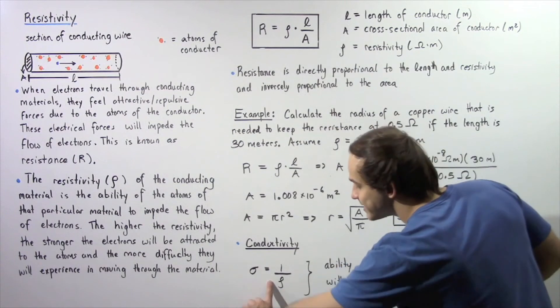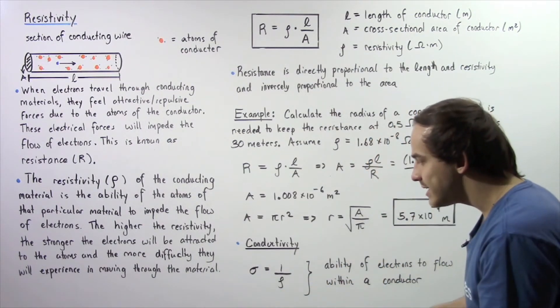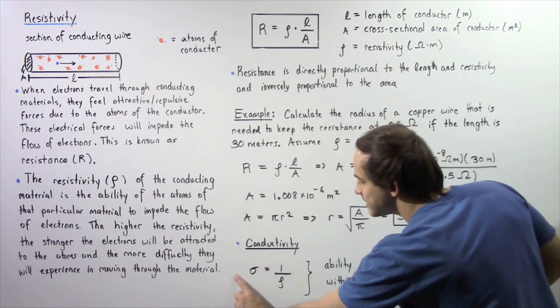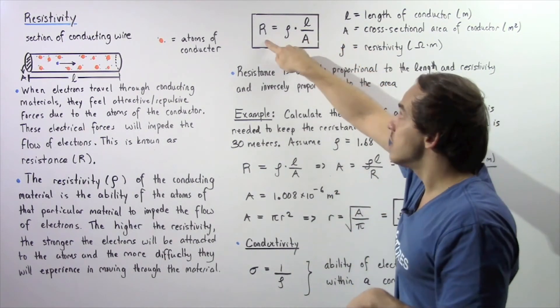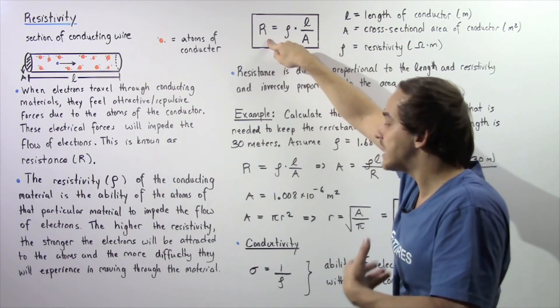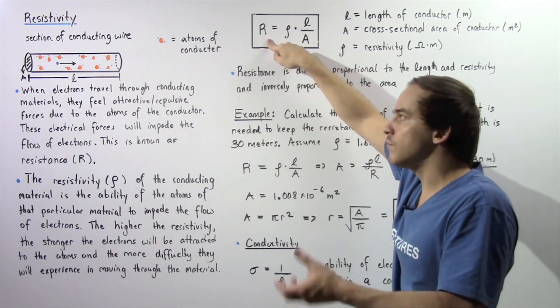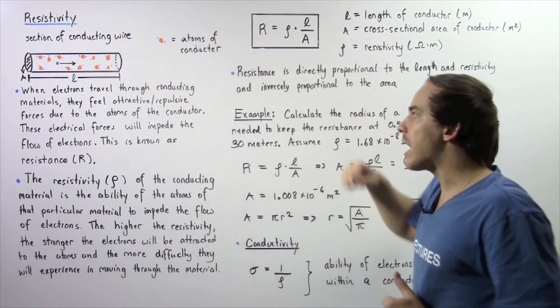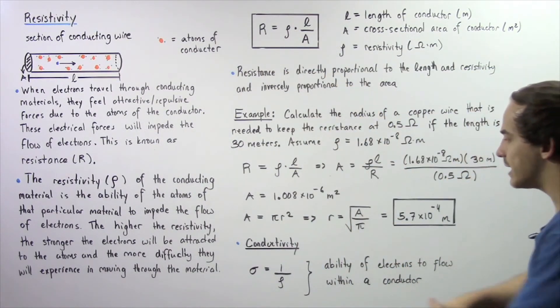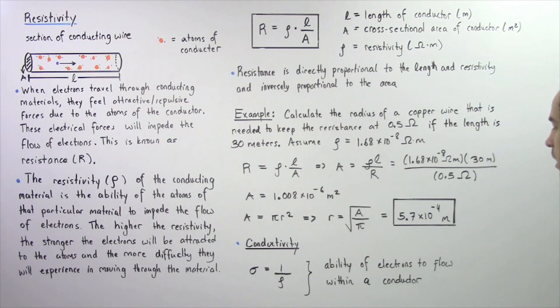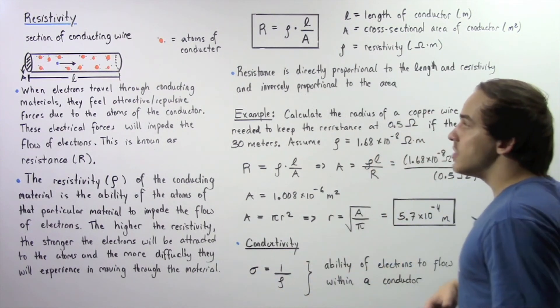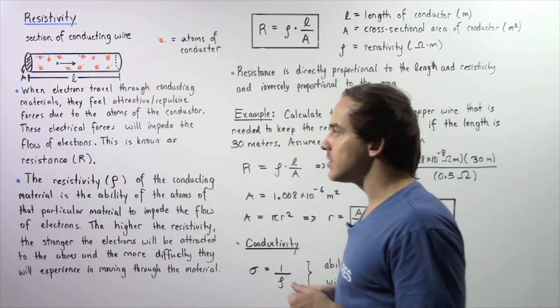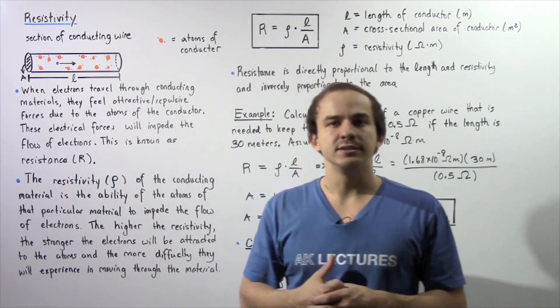We see that if our resistivity decreases, our conductivity increases. That makes sense because if resistivity decreases, the resistance decreases, and that implies that the electrons are able to flow more freely through our conducting material. This is simply the ability of the electrons to flow within our conductor. The higher this value is, the lower resistivity is, and the more able our electrons are to flow through that conducting material.